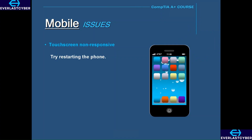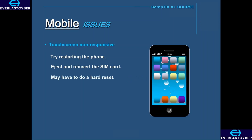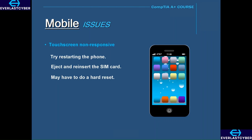If you power it back on and you still have the issue, you can try ejecting the SIM card and then putting it back in. If that doesn't work, then you may have to do a hard reset on your cell phone. You can refer to the manufacturer's documents for specifics on how to do a hard reset for your specific device.